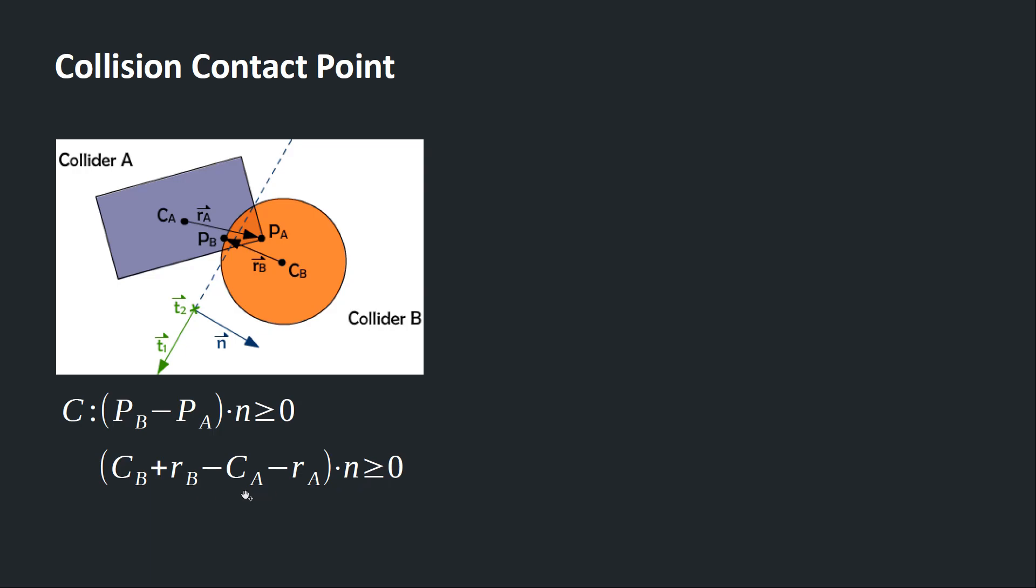Differentiating the position constraint with respect to time gives us the velocity constraint. This looks a little bit complex at first, but it's actually quite simple. So let's look at the part within the parentheses first. The left half is about collider A, the right half, collider B.